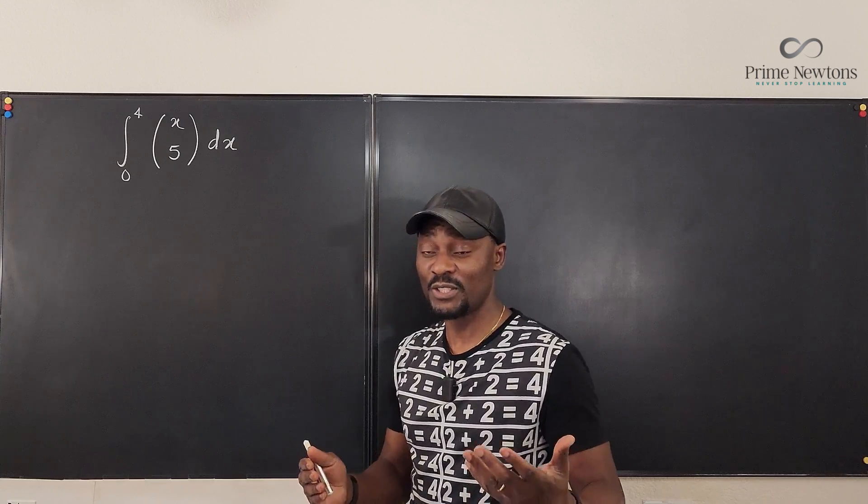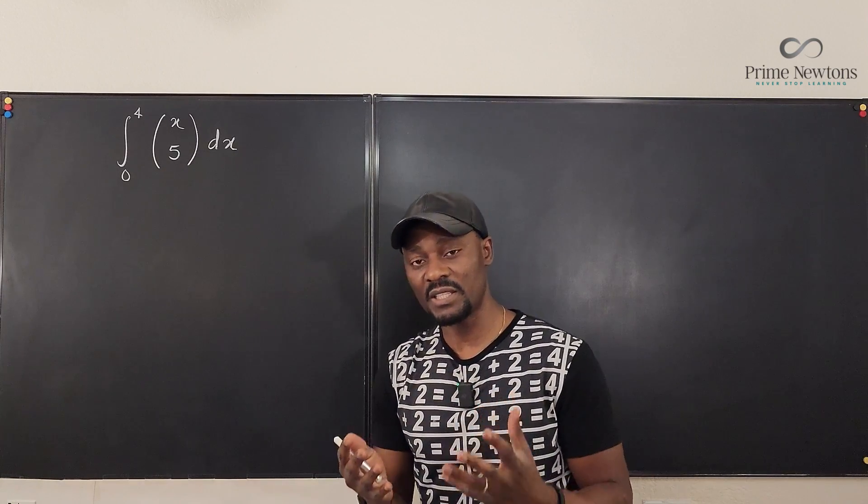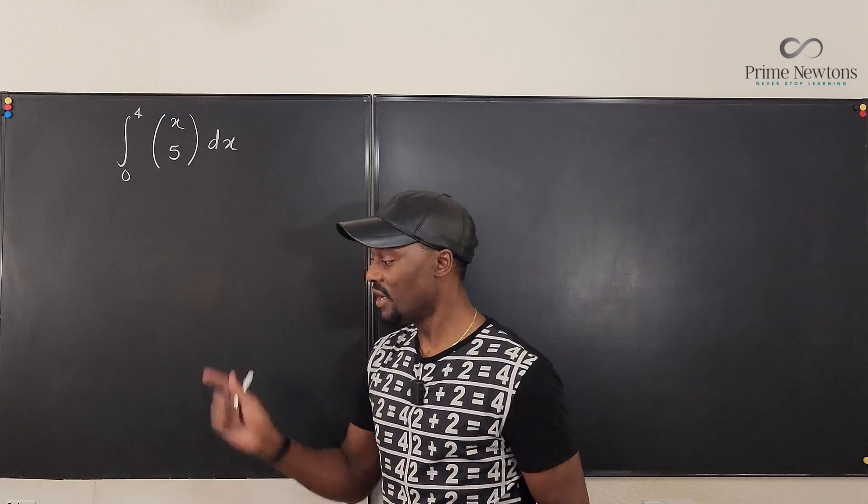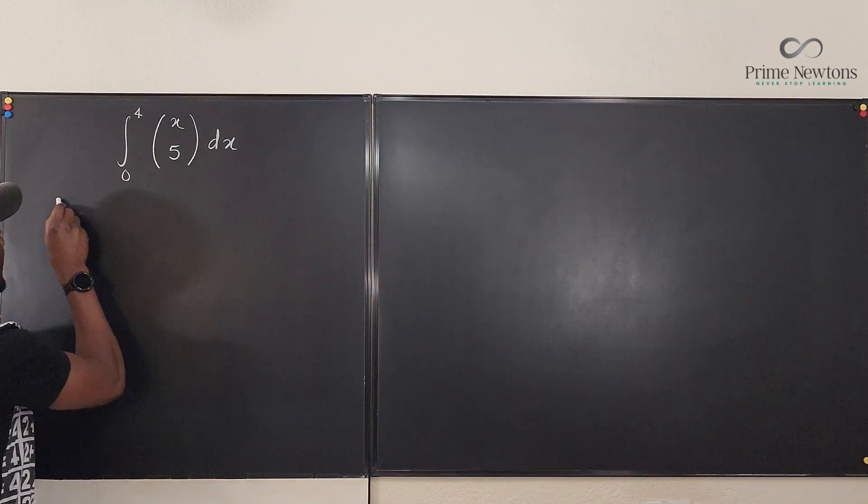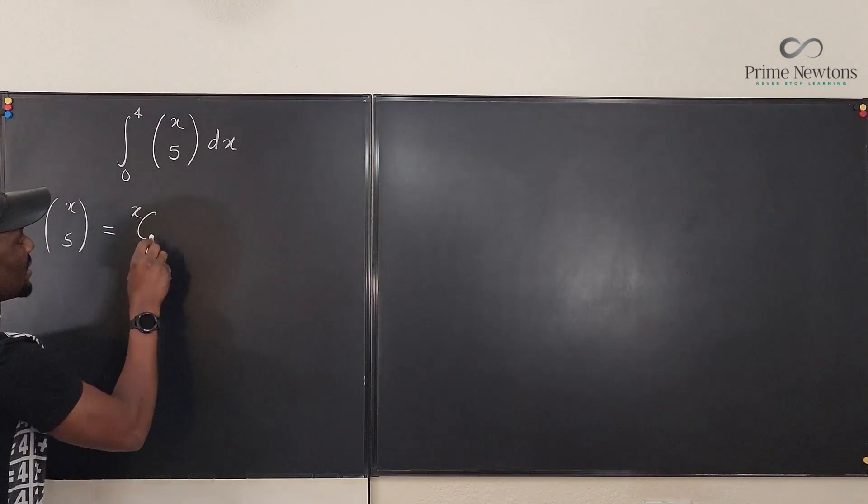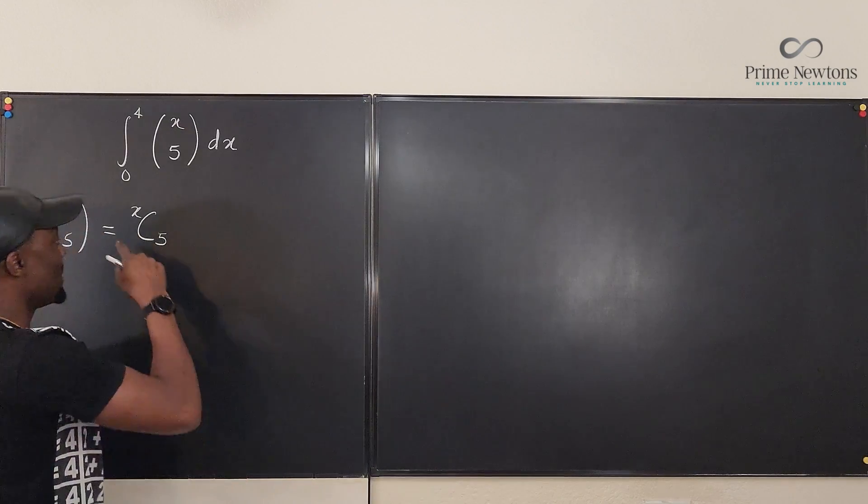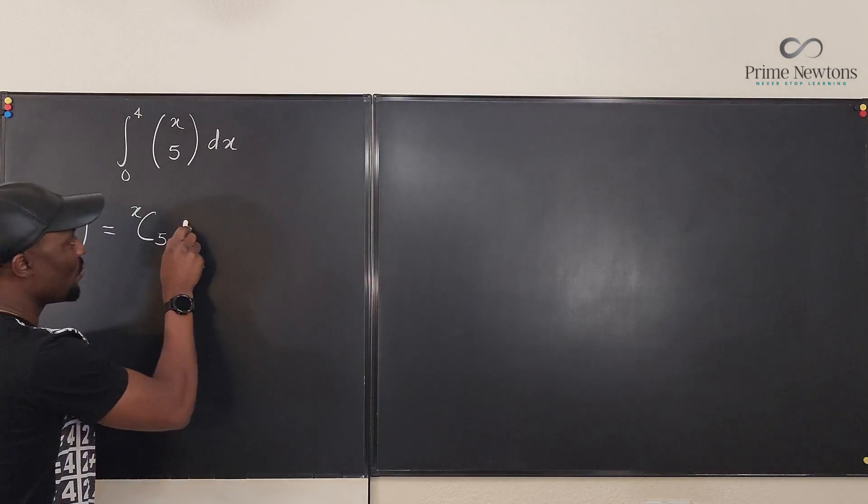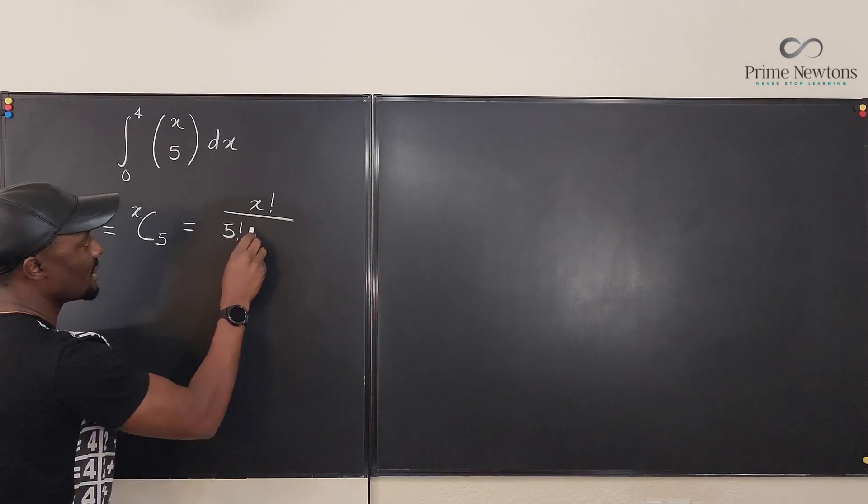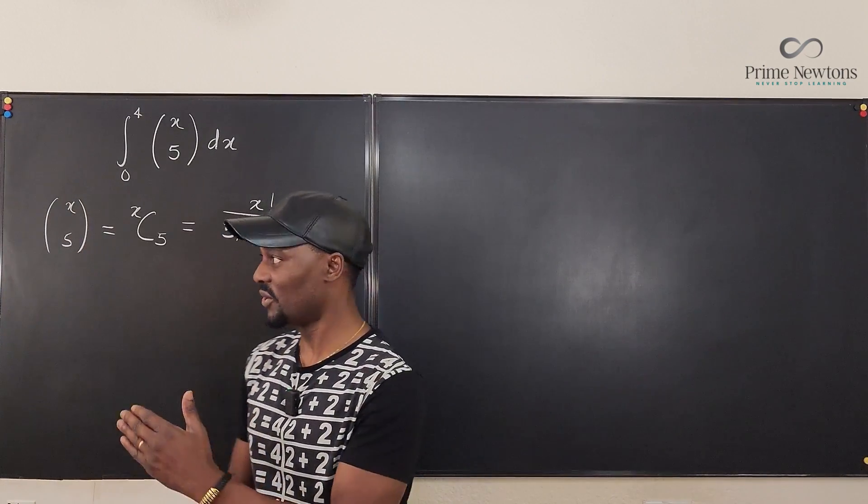The very first thing you want to do is rewrite this in a way that you understand. This is the notation for the combination expression. That is, from x number of items, choose 5. So it is x combination 5. This is supposed to confuse you if you're not used to that. But this is how you write x combination 5. And what does this mean? This simply means x factorial divided by 5 factorial times x minus 5 factorial. That's what this expression is. And this is a pre-calculus concept.